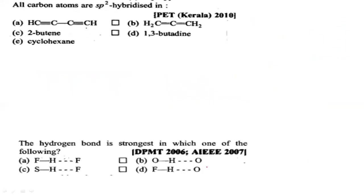Next question: in which molecule are all carbon atoms sp2 hybridized? Options are given. In the first molecule, this carbon is attached with hydrogen and one carbon — two groups — so sp hybridized. This carbon is also attached with two groups — sp hybridized again. Moving to the second molecule: some carbons are attached with two groups (sp), some with three (sp2), so this option is also wrong, since we want all carbons to be sp2.